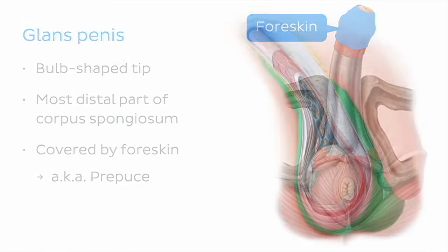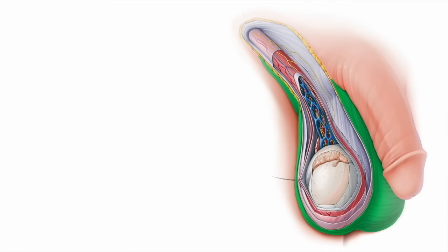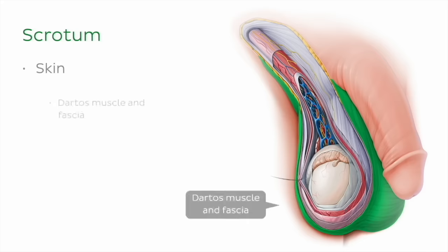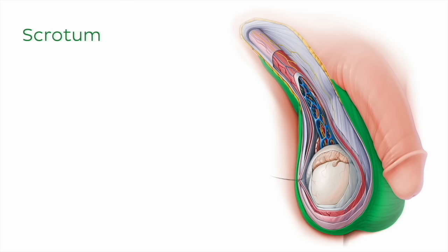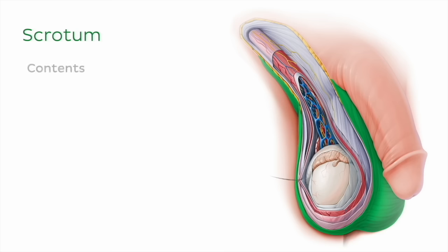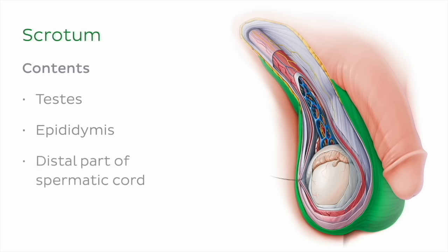At last we have reached the other external organ of the male genitalia, the scrotum. This wrinkled sac is covered externally with thin, pigmented skin. The dartos muscle and fascia, which are an extension of the superficial fascia of the abdomen, make up the next layer. Internally, the scrotum is composed of the same layers of the spermatic cord. The scrotum houses the testes, epididymis, and the distal part of the spermatic cord, including the ductus deferens.